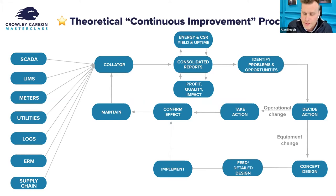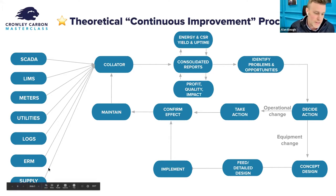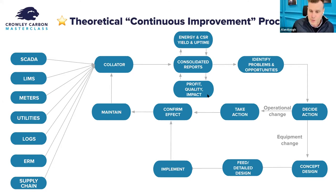We talk to a lot of customers in the food industry and this is a reflection of the aspirational or theoretical continuous improvement process. On the left-hand side you have all the potential data sources: SCADA, BMS, lab information system, various meters, utilities, boiler, air compressors, operator logs, supply chain systems, production information systems, ERPs. All of that data gets polled continuously, automatically gathered, sorted, and cleaned up to a central collator — a person, software, or bot — producing beautiful CSR, energy, and production reports. Experts then descend on those reports to see opportunities for improvements and possible problems.